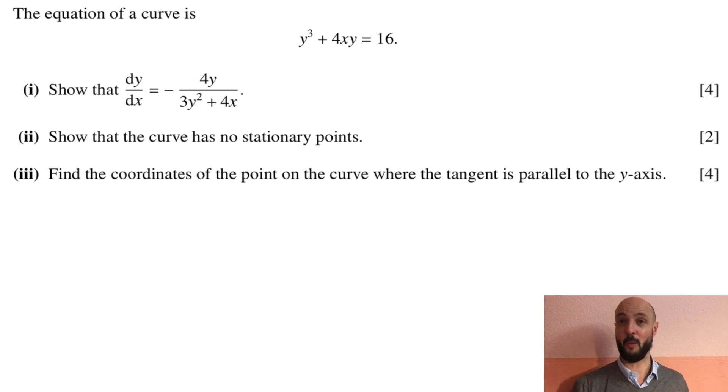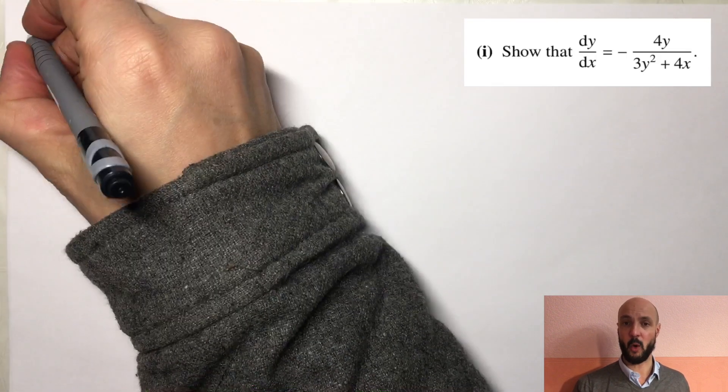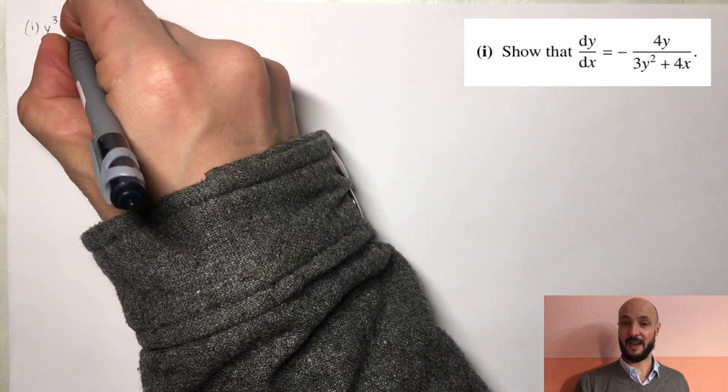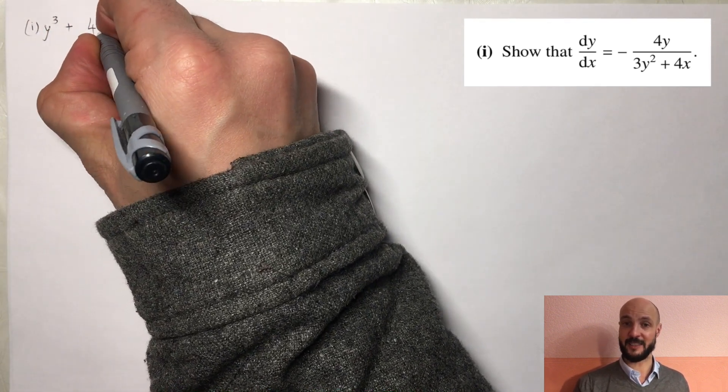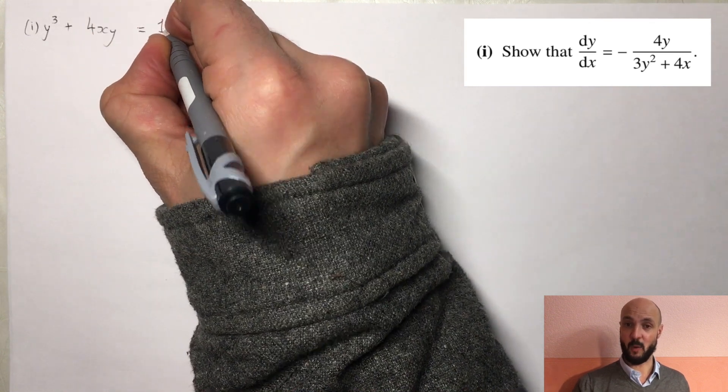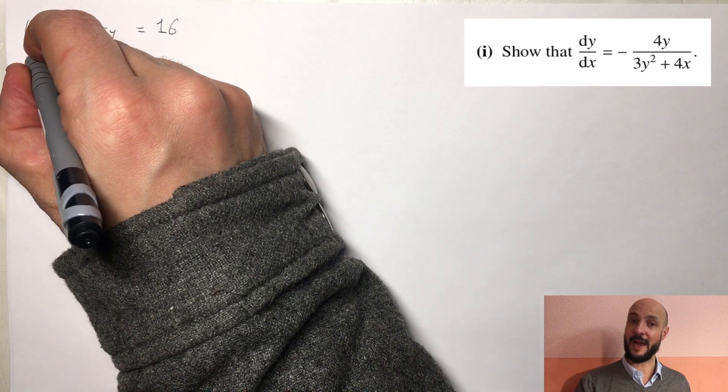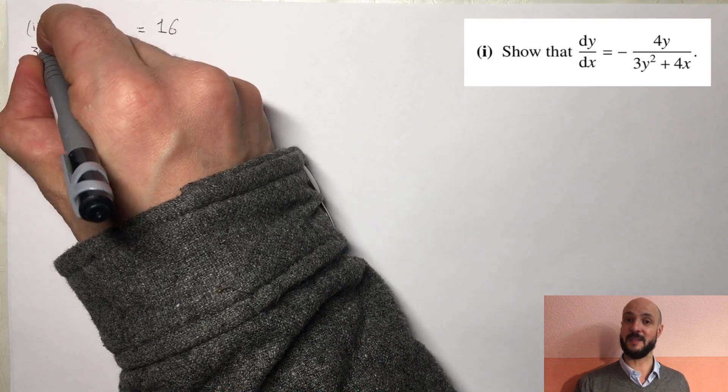So if you have for instance where you've got y cubed we're going to differentiate that with respect to y and then we're going to multiply that by dy/dx, effectively like using the chain rule. But we'll see this as we go through it. So if we start off we write down our equation y cubed plus 4xy equals 16.